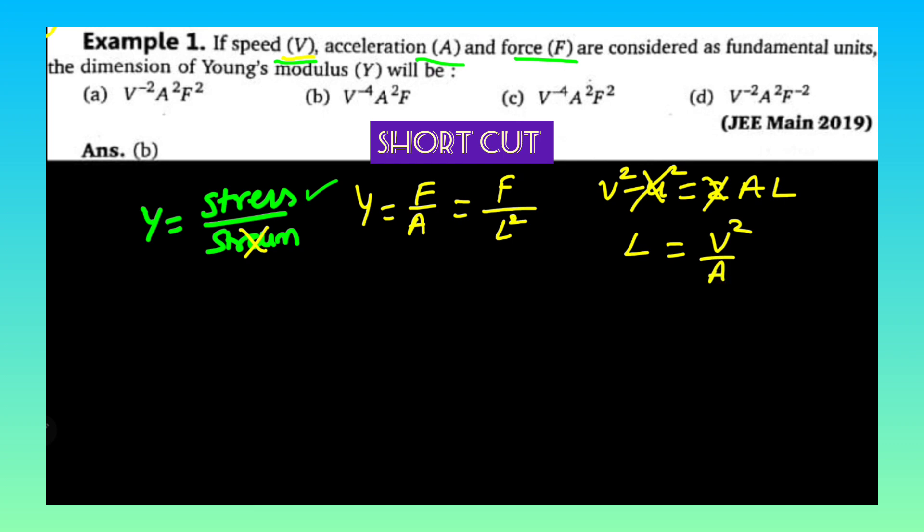L is equal to v square by a. So in here you have to substitute the value of L, then you'll be getting Young's modulus is equal to force by L. L means v square by a whole square.